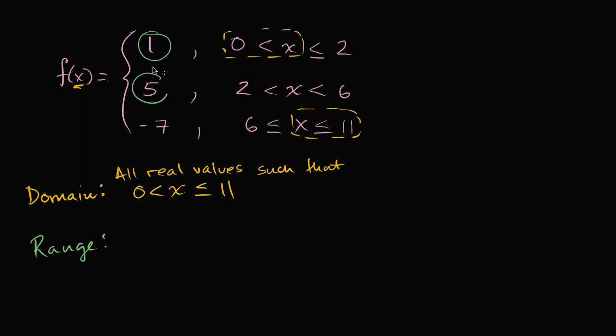Because there's only three values that this function can take on. It can take on, f of x can be equal to one, it can be equal to five, or it could be equal to negative seven.